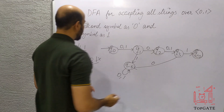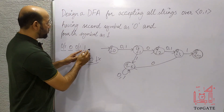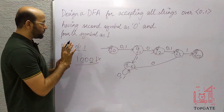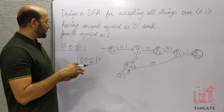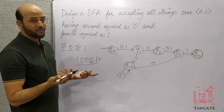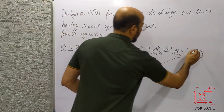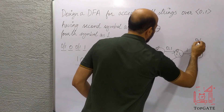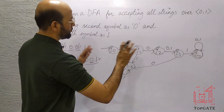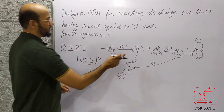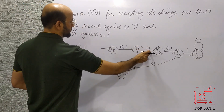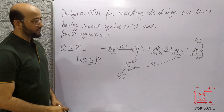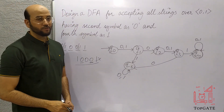After reaching Q4, I said that after the fourth symbol I can have anything. The only condition is the fourth symbol should be 1; the fifth and beyond can be anything. So I add a self-loop of 0 and 1 at Q4, meaning all such strings will be accepted. The second symbol will always be 0 and the fourth symbol will always be 1. Thank you so much.